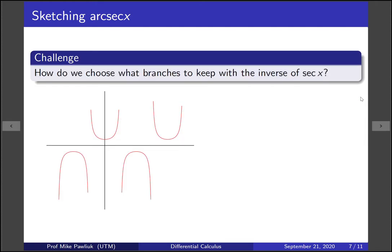Now let's go to our real challenge. We want to sketch arc secant of x. So how do we choose what branches to keep with the inverse of secant?